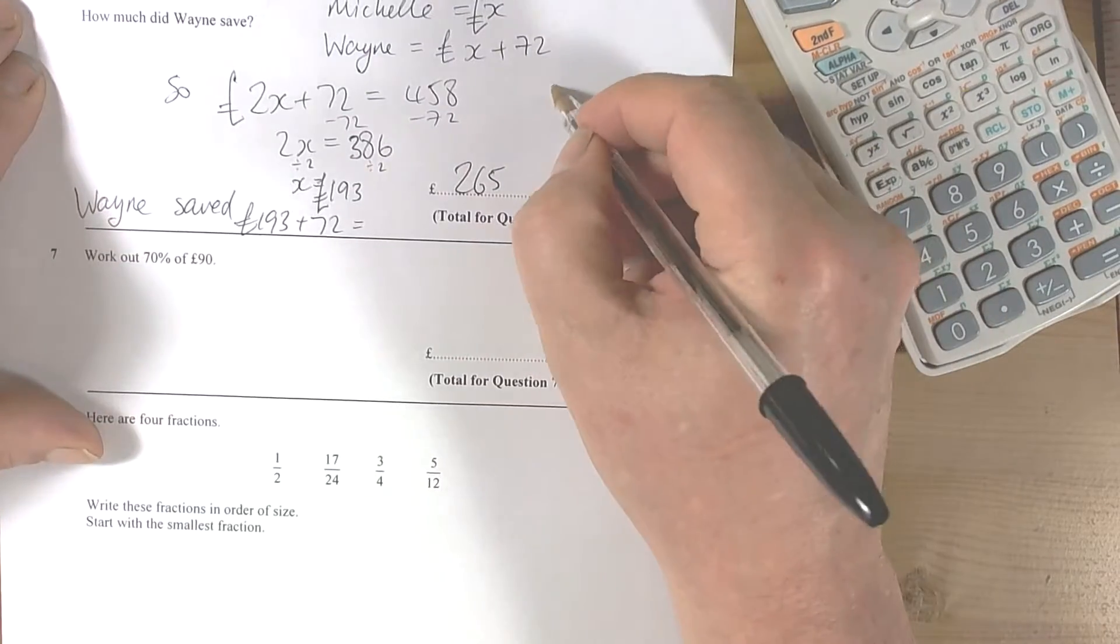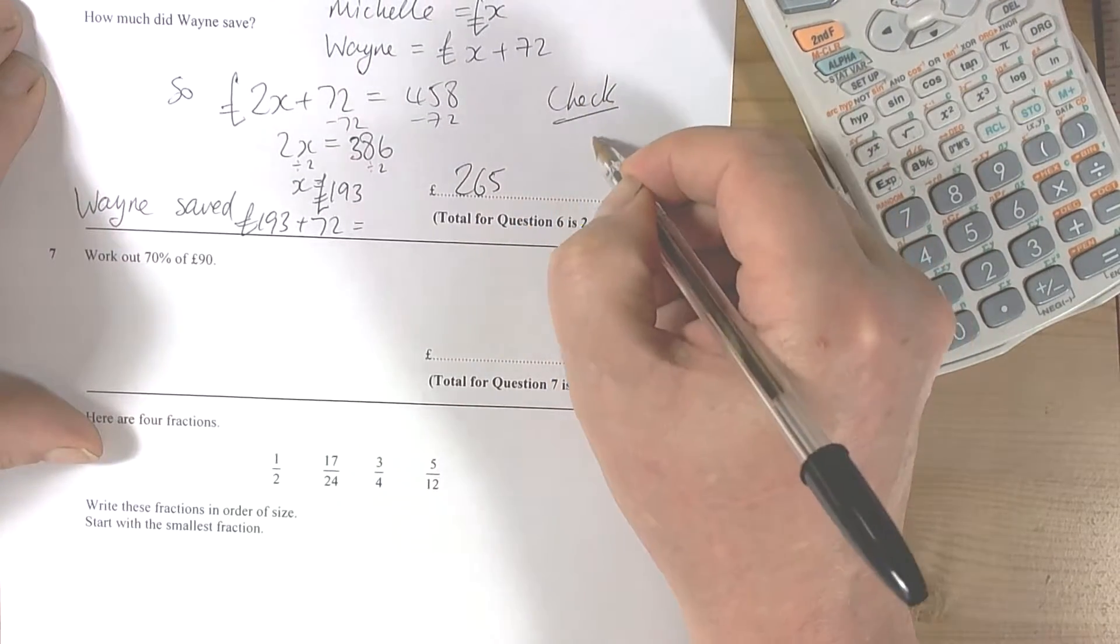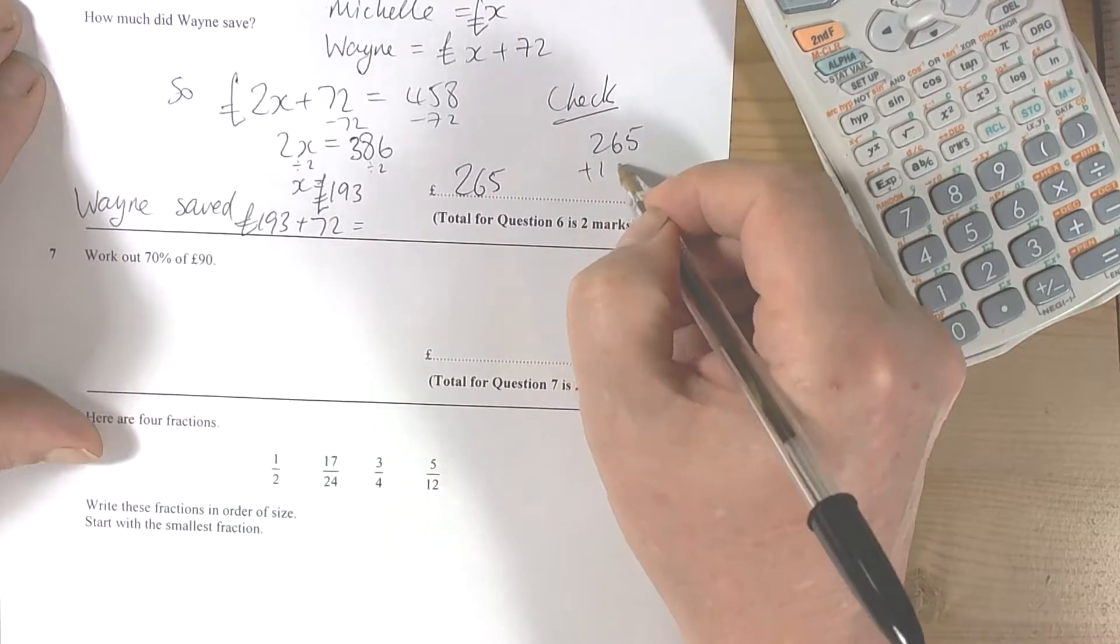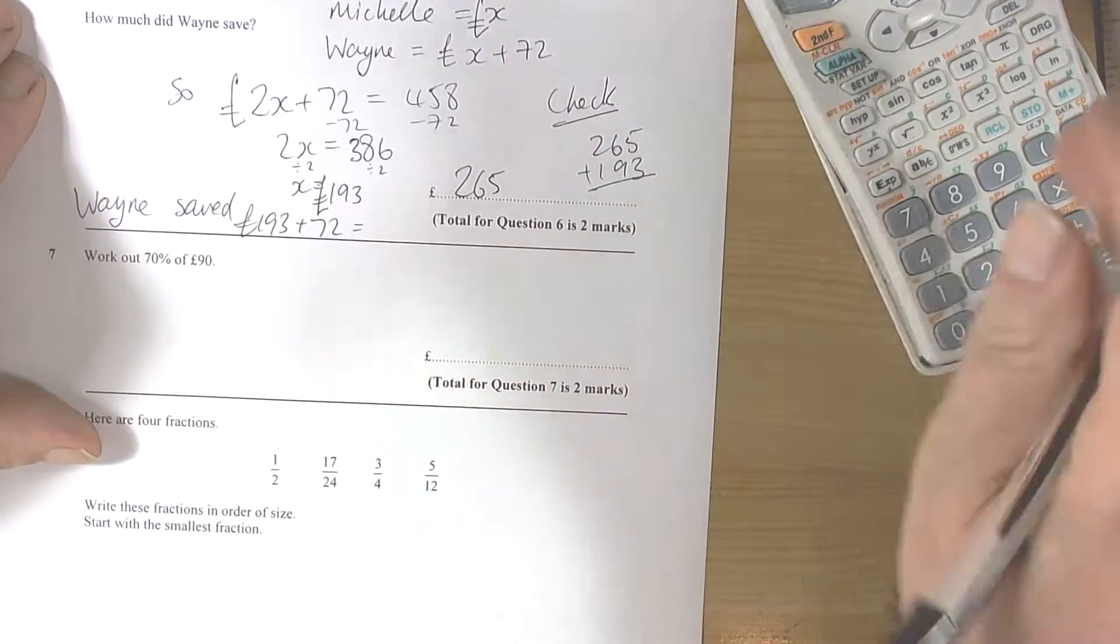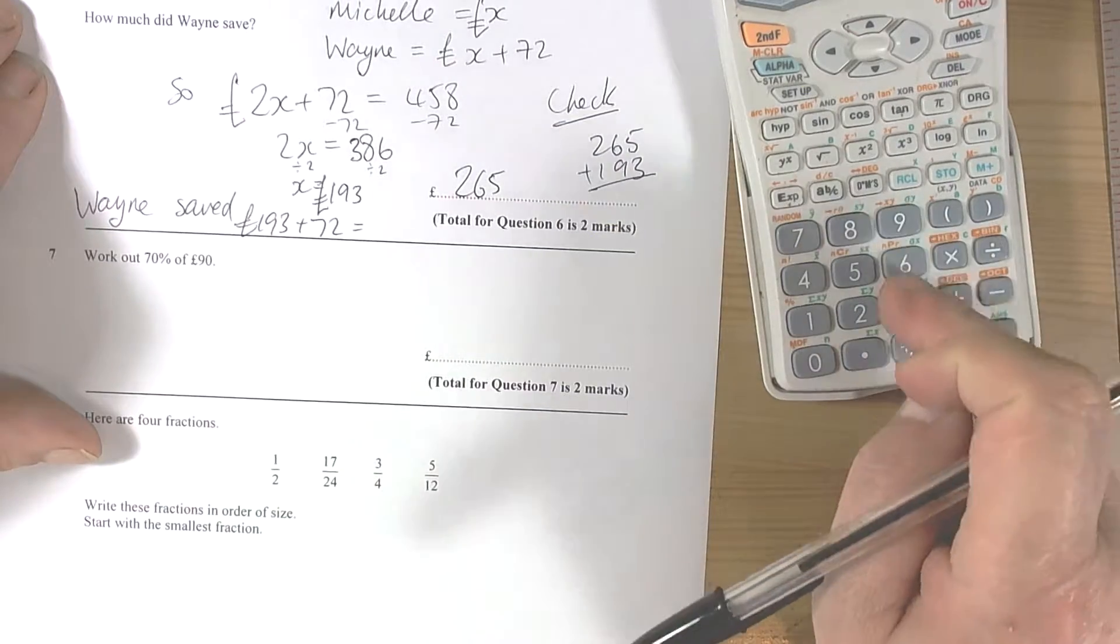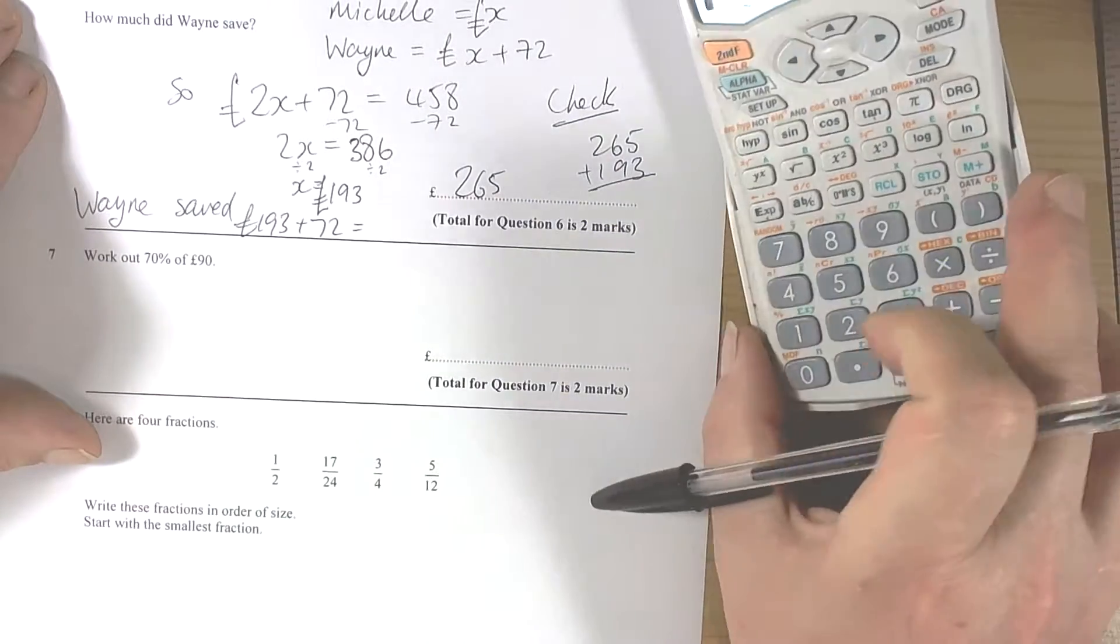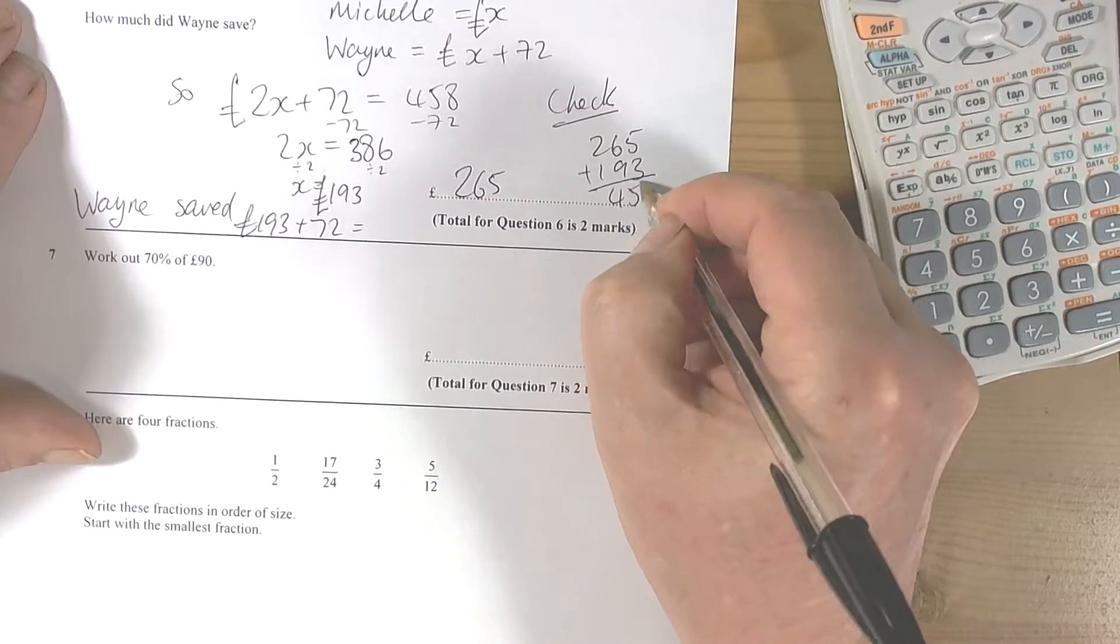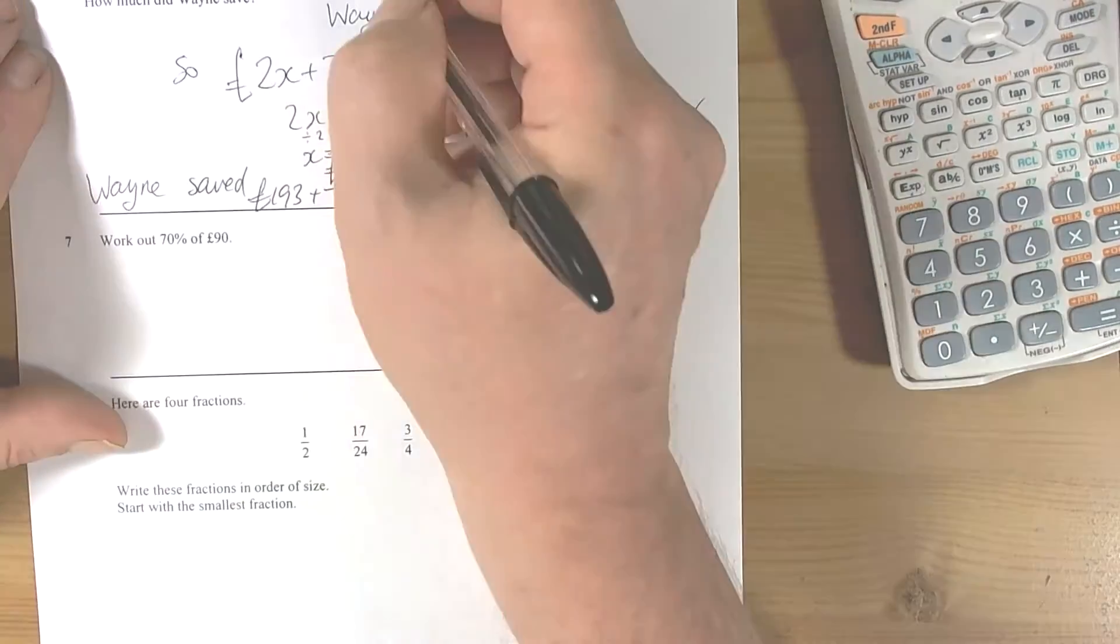So we check: 265 plus 193 equals 458. Yep, that's right, because that's what they saved.